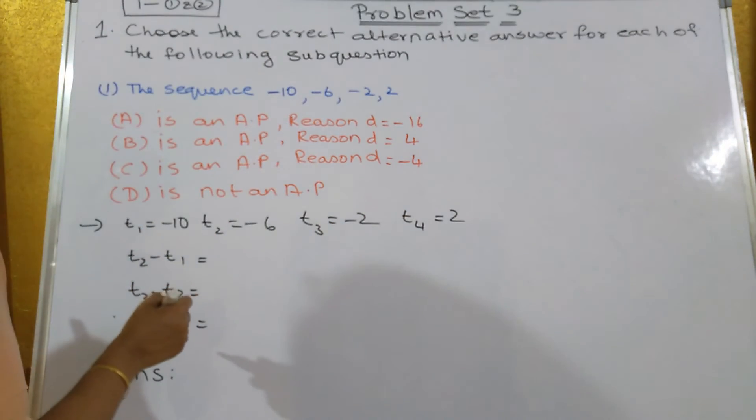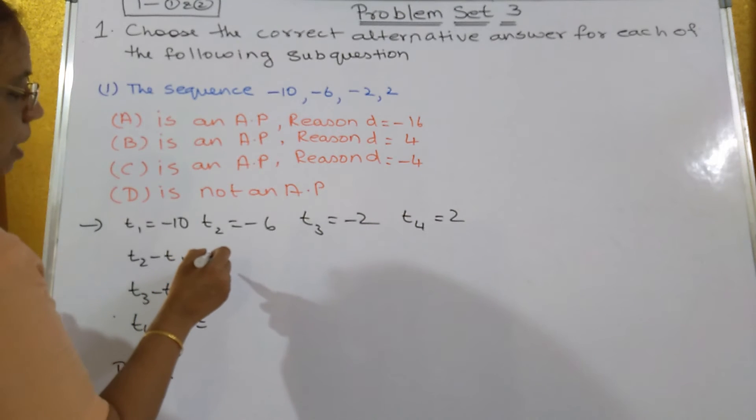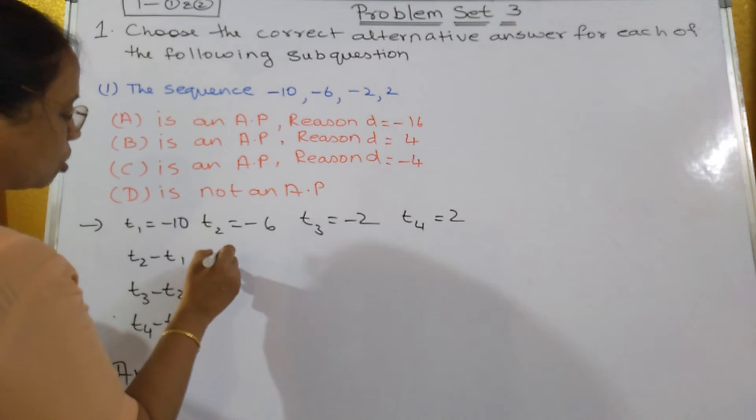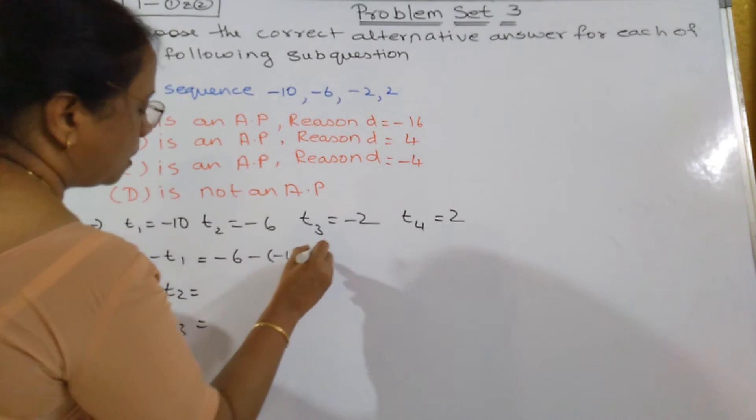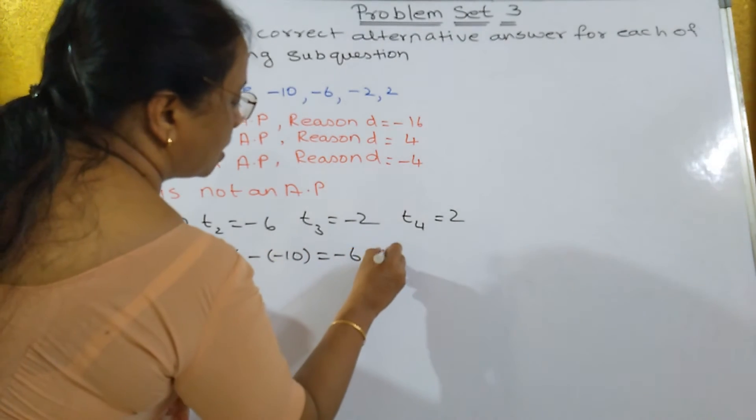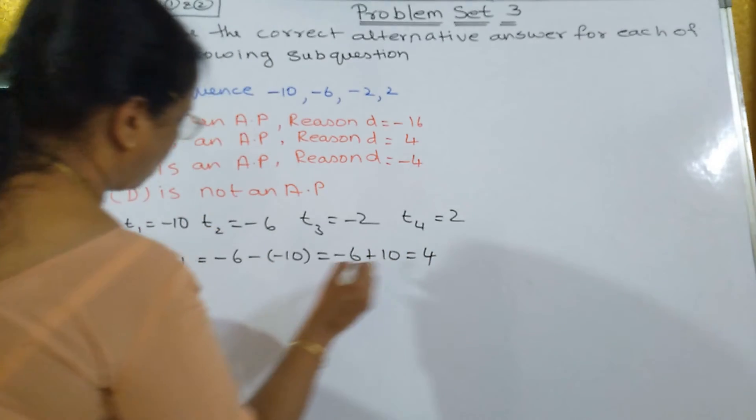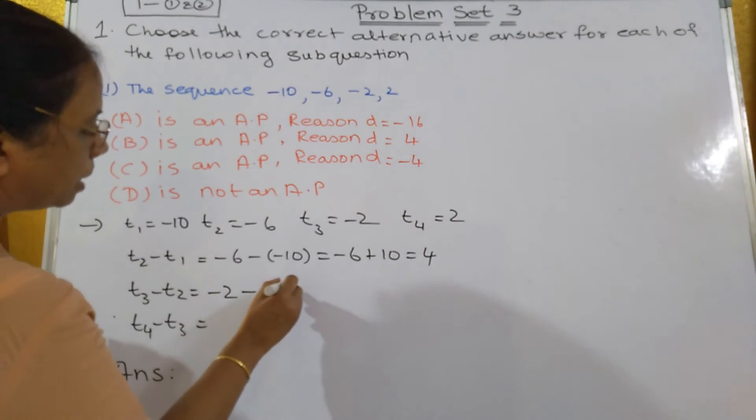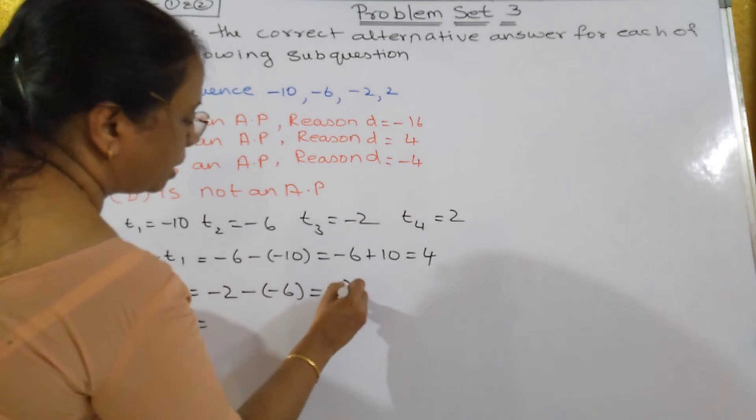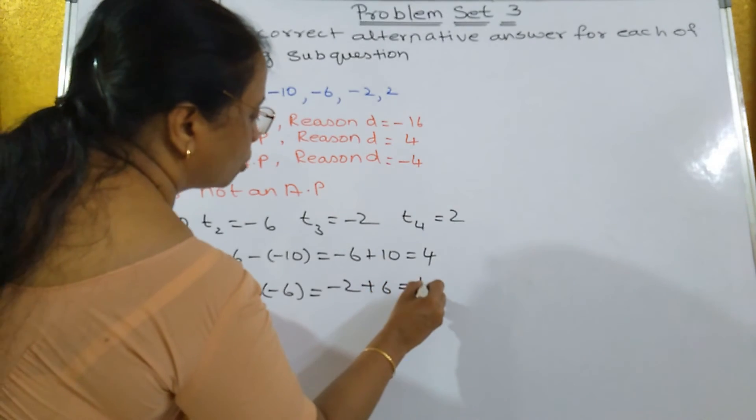Now, if you get common difference fixed then it will be in AP, otherwise it will not be in AP. So, minus 6 minus minus 10, that's equal to minus 6 plus 10, that's equal to 4. Next one, T3 is what?